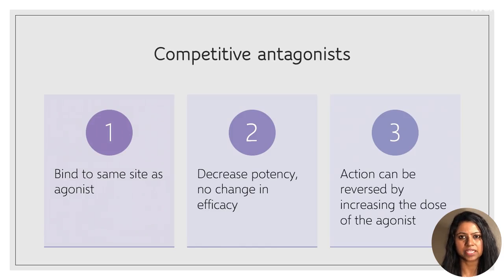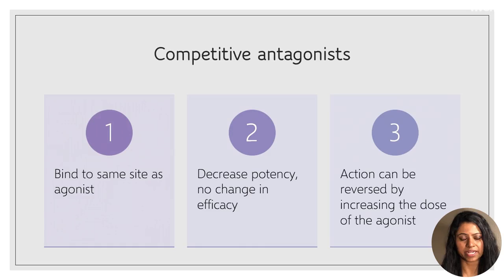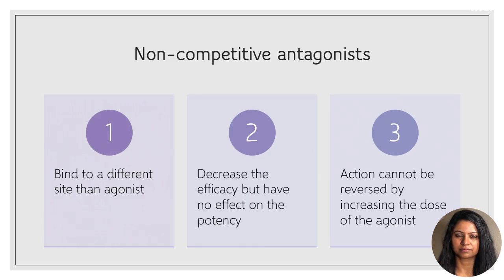An example is flumazenil, which is an antagonist at the GABA receptor. For that reason, flumazenil is used as an antidote in the treatment of benzodiazepine poisoning.